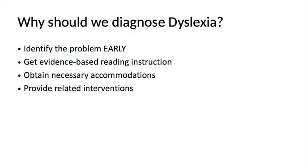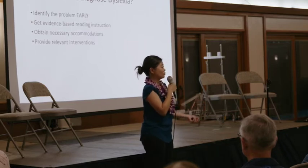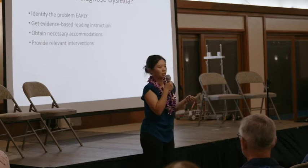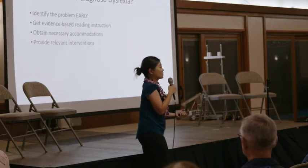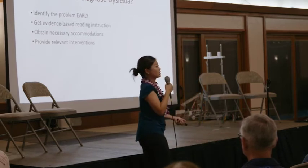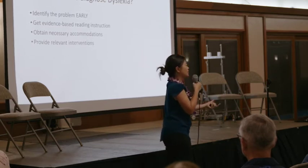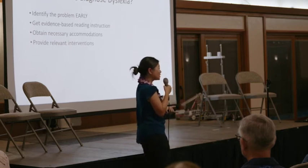We want to identify the problem early. Without an actual diagnosis — without the label — I've had parents who say please don't use the word dyslexia. There's a stigma and negative connotation that can be hurtful. But as a clinician, I'm going to call it dyslexia because it's a medical condition. If you have a cold, you call it a cold; if it's dyslexia, you call it dyslexia. You need a label to identify the actual problem. If you don't know what the issue is, how are you going to decide on interventions or convince the school to provide effective instruction? You need the diagnosis.